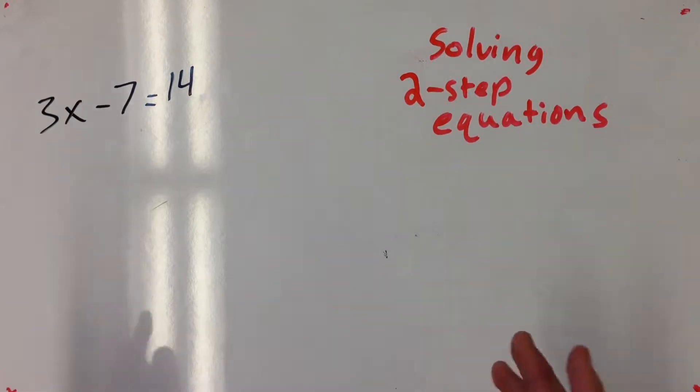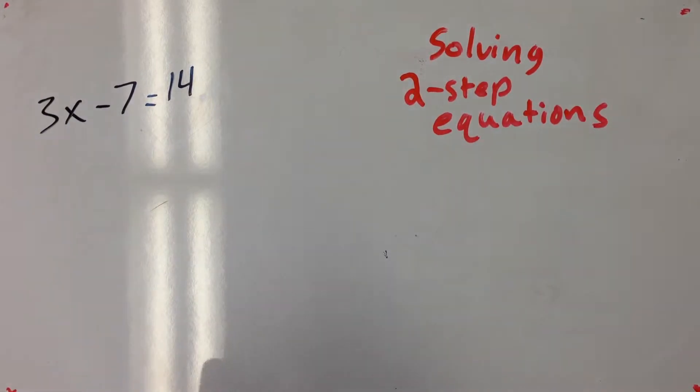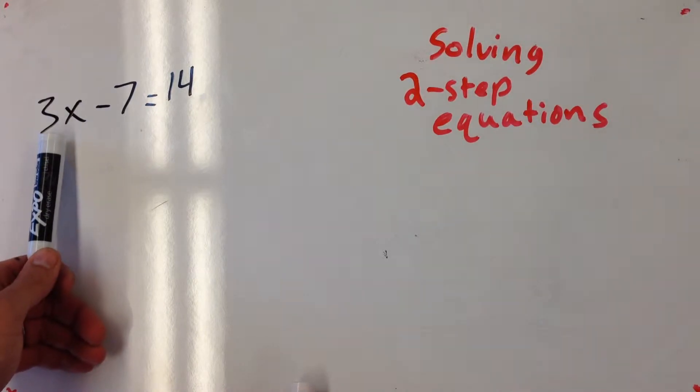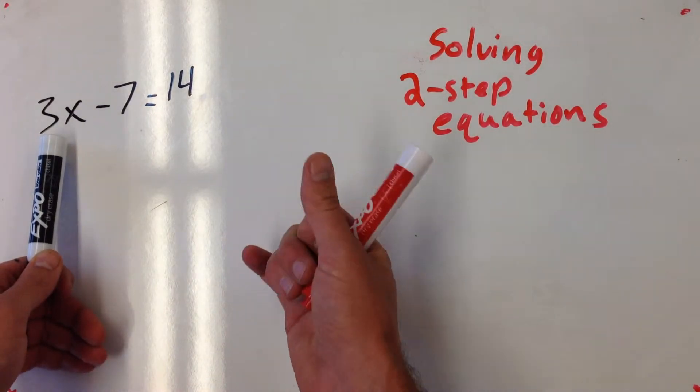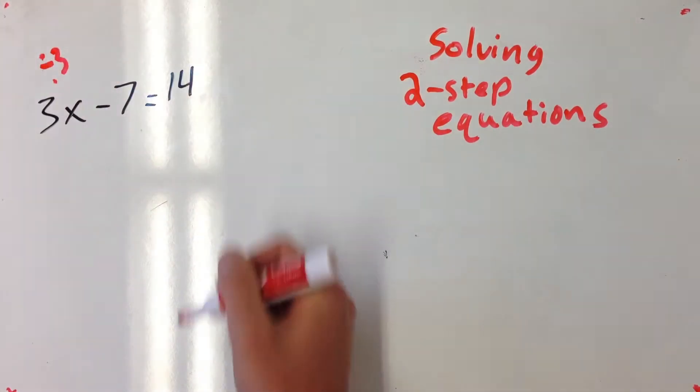Once again, I want to take care of this x. I want to isolate it, get it on its own side. So let's just look at the things that are happening to x. It's being multiplied by 3, so I want to undo that. So I know I'm going to have to divide by 3 at some point.